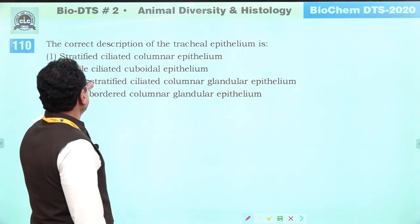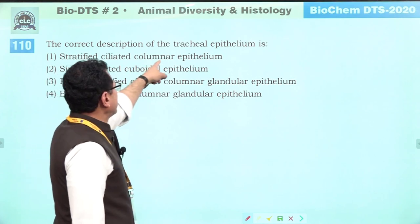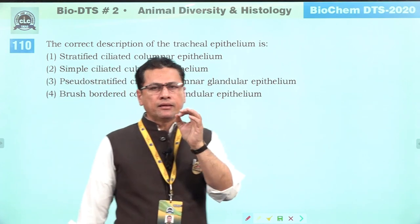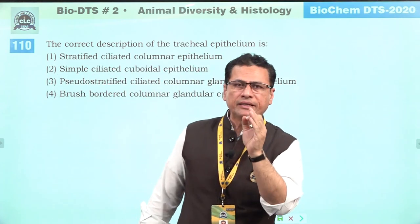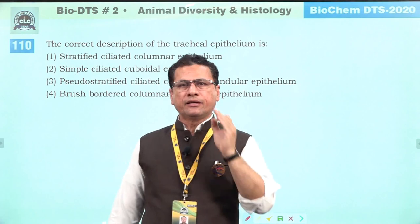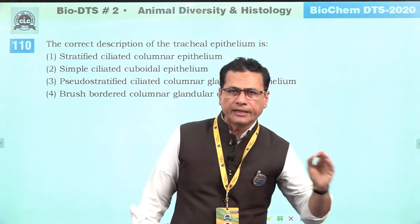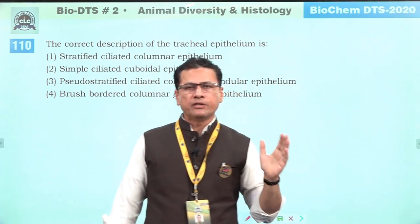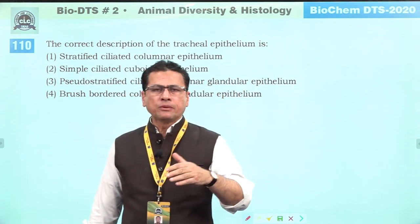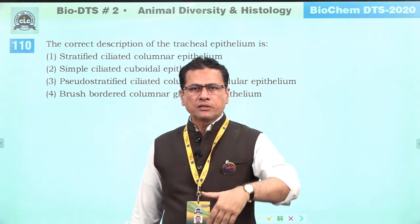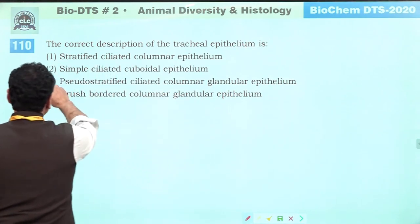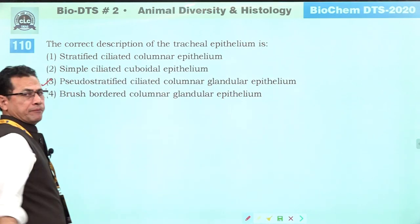The correct description of tracheal epithelium: it is pseudostratified ciliated columnar glandular epithelium, which helps in transportation of mucus upwards. Answer is three.